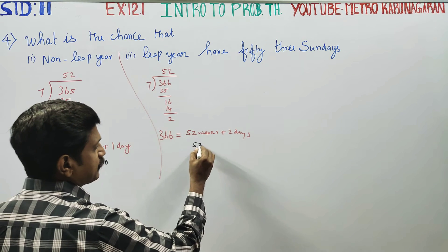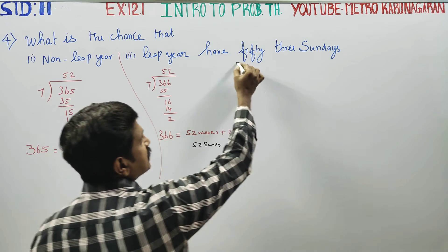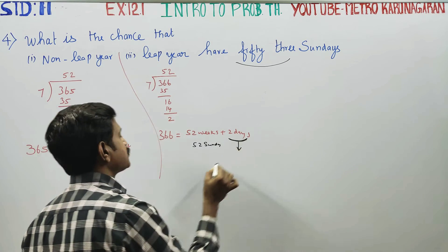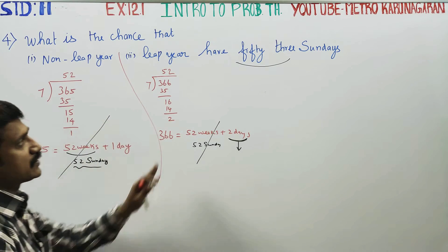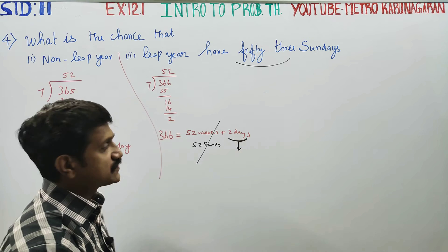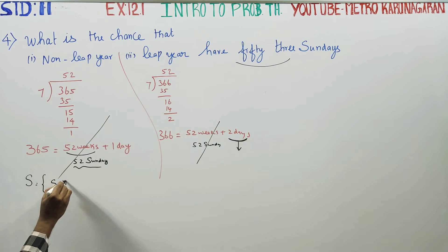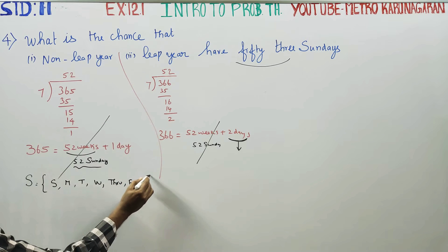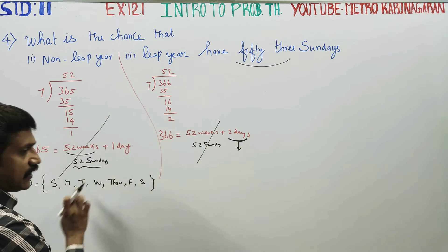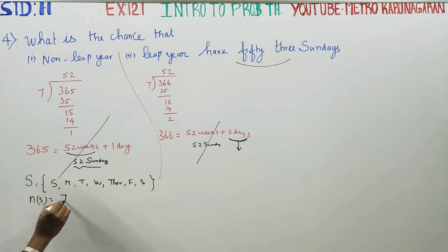52 Sundays are compulsory. For the 1 extra day, we define our sample space. The sample space consists of the 7 possible days: Sunday, Monday, Tuesday, Wednesday, Thursday, Friday, Saturday. So N(S) = 7.